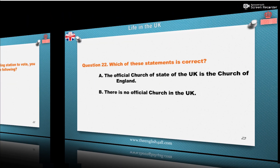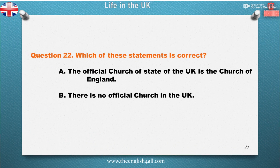Question 22: Which of these statements is correct? A. The Official Church of State of the UK is the Church of England. B. There is no official church in the UK. The correct answer is: The Official Church of State of the UK is the Church of England.